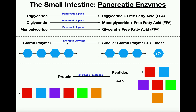We also have pancreatic amylase — a starch polymer that is too large to be absorbed is acted on by amylase, which cleaves off glucose units so they can be absorbed as monomers. For pancreatic proteases, we have several, including trypsinogen, chymotrypsinogen, and carboxypeptidase.